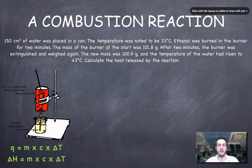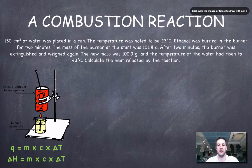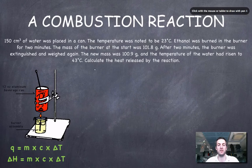We've burned ethanol in this burner and we've noted that the mass of the burner was 101.8 grams at the start and 100.9 grams at the end. The temperature of the water had risen to 43 degrees centigrade and we're being asked to calculate the heat released, which remember is Q.